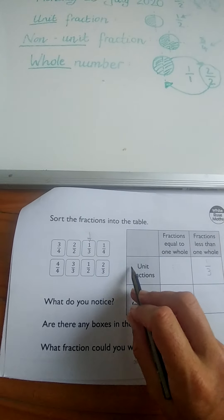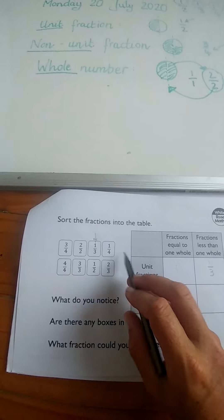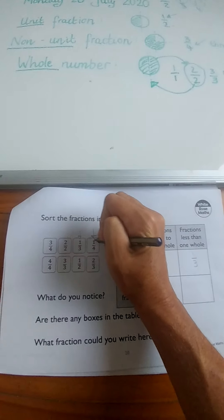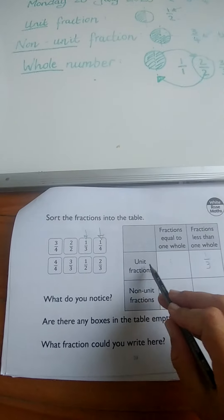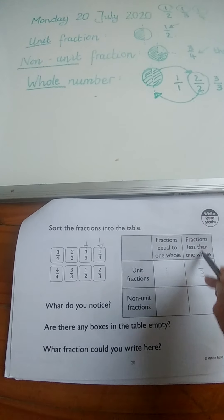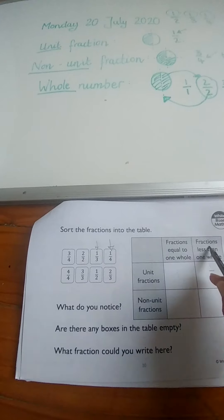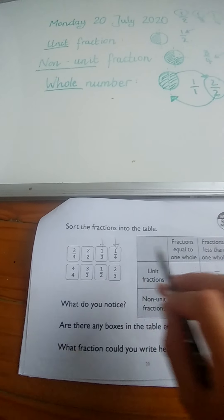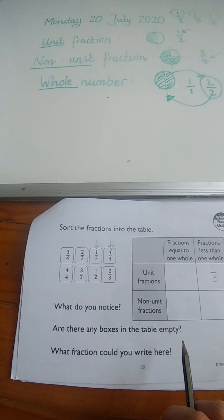Where's our next unit fraction? Well that could be this one because it's also got a one at the top. Now you have to tell me, because we found the unit fraction this way, so now we look down this way. Is it this one or is it this one? A quarter. And you're going to write it into the right box.